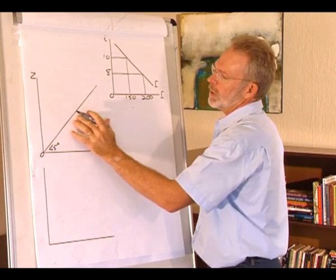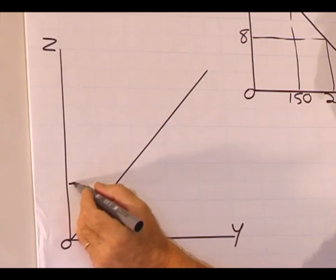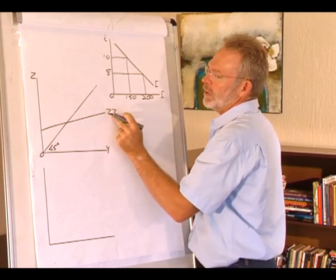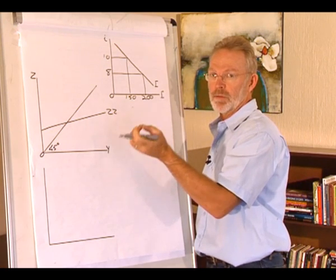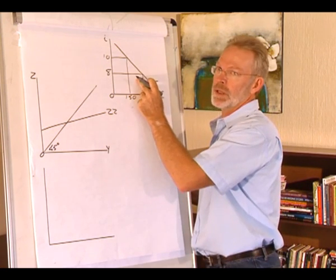When we go to the goods market, we have the demand for goods and services. Included in the demand for goods and services, we have consumption spending, government spending, and also investment spending.